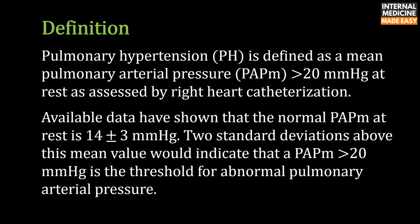Pulmonary hypertension is defined as a mean pulmonary arterial pressure of more than 20 millimeters of mercury at rest, as assessed by right heart catheterization. Available data have shown that the normal mean pressure at rest is 14 plus or minus 3 millimeters of mercury. Two standard deviations above this mean value indicates that a mean pressure of more than 20 mmHg is the threshold for abnormal pulmonary arterial pressure.